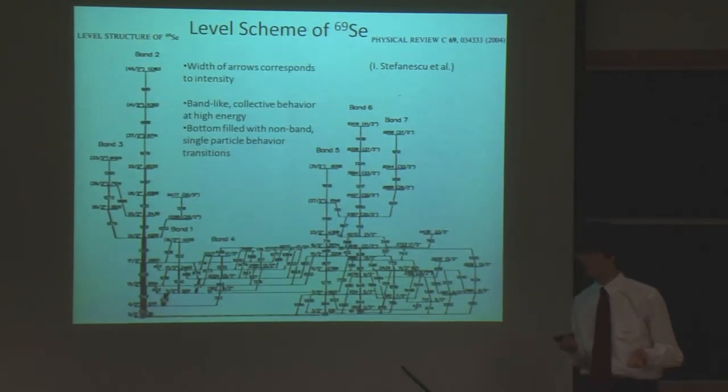This is a level scheme of Selenium-69. A level scheme just shows all the energy levels and the transitions of the nucleus. So the horizontal bars are the energy levels and the arrows between them are each of the possible gamma-ray decays or transitions. We can see the spin assignment in the left corner of each energy level, and the spin value is changed by 0, 1, or 2.